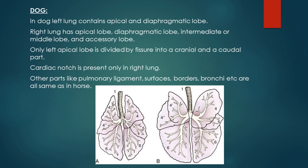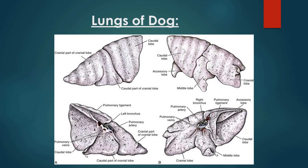In dog, the left lung contains the apical and diaphragmatic lobe, and the right lung contains the apical, diaphragmatic, intermediate, and accessory lobe — the number of lobes is the same in both dog and ox. However, in dog only the left apical lobe is divided by fissure into a cranial and caudal part, whereas in ox both right and left apical lobes were divided this way. The cardiac notch is present only in the right lung of dog.